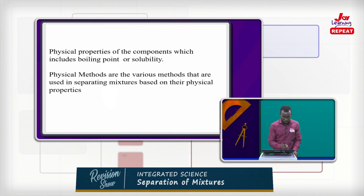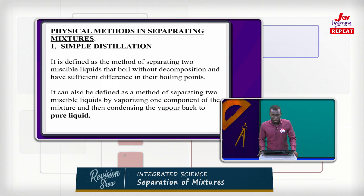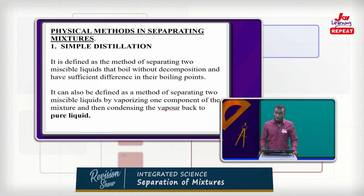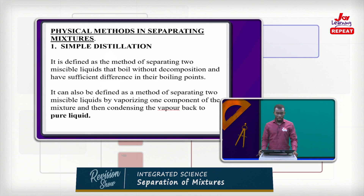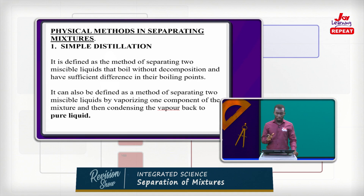One of the physical methods of separating mixtures is called simple distillation. There are other types of distillation, but the first one is simple distillation. It is defined as the method of separating two miscible liquids that boil without decomposition and have a sufficient difference in their boiling points.